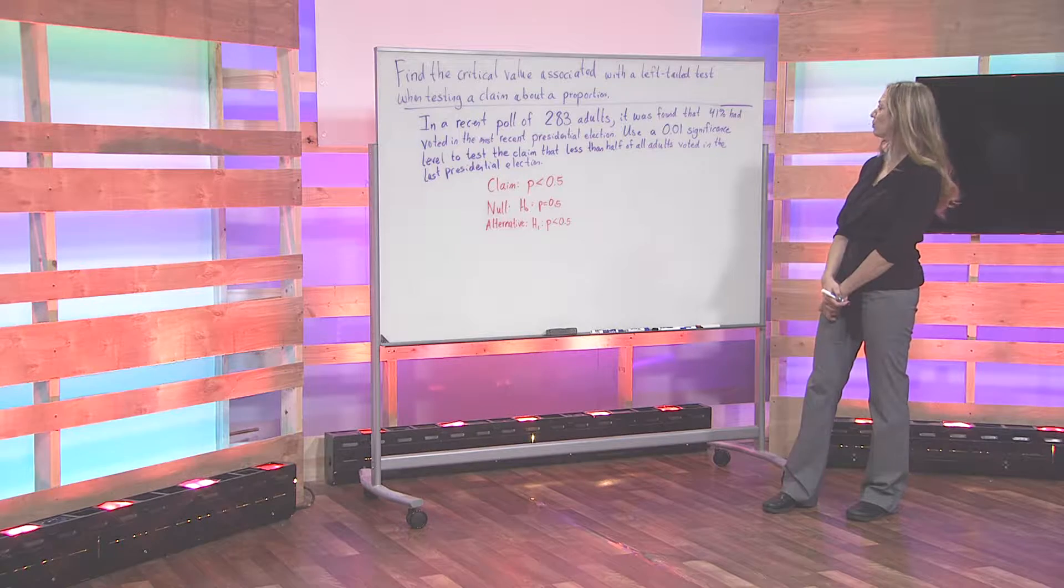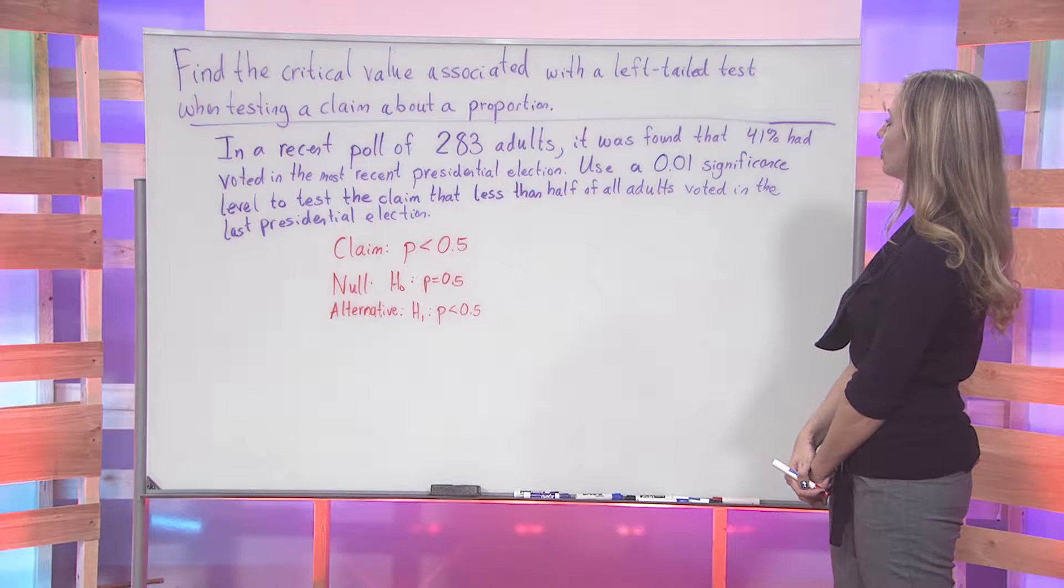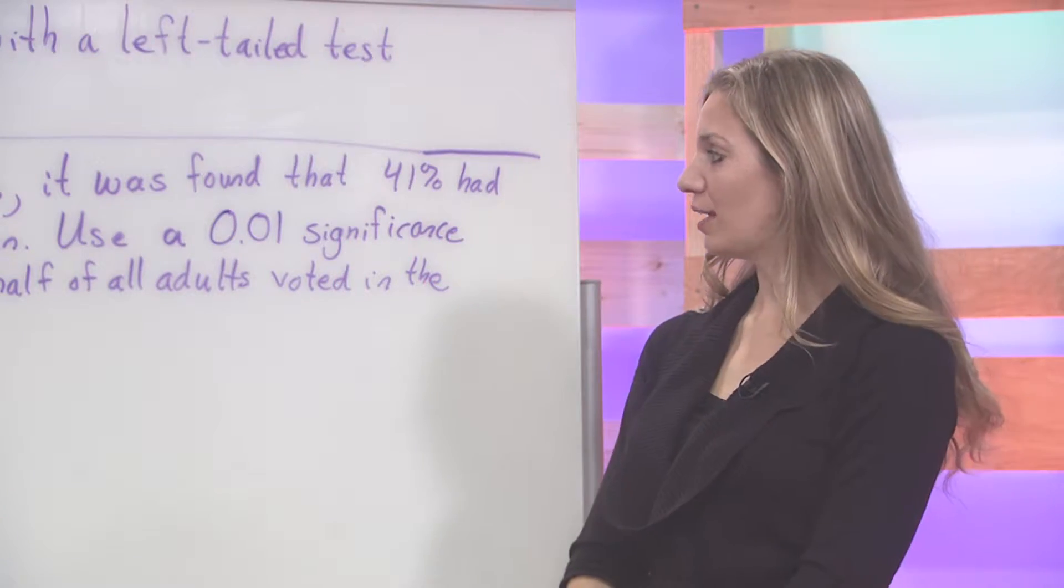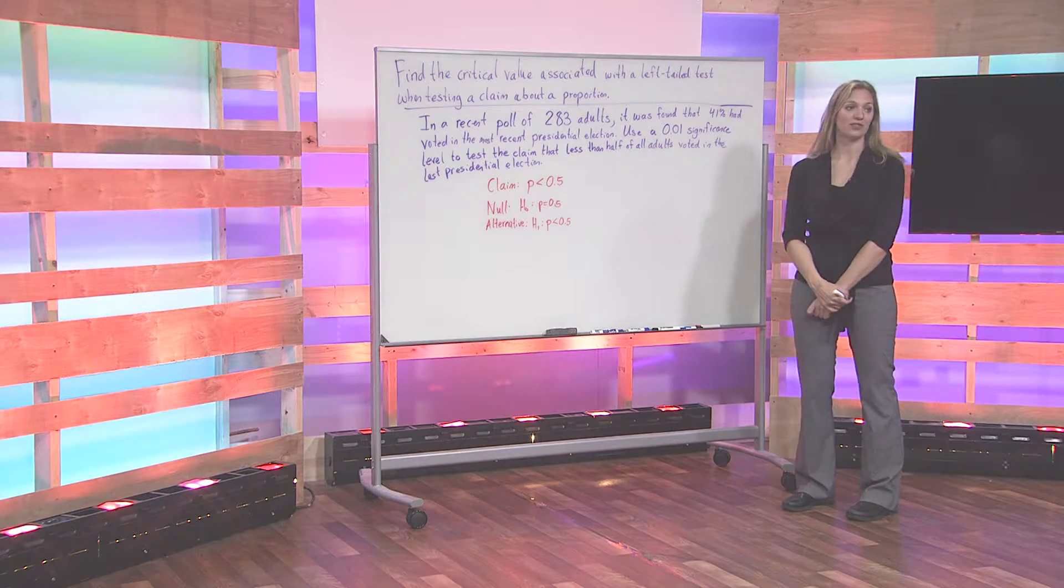it was found that 41% had voted in the most recent presidential election. Use a 0.01 significance level to test the claim that less than half of all adults voted in the last presidential election.